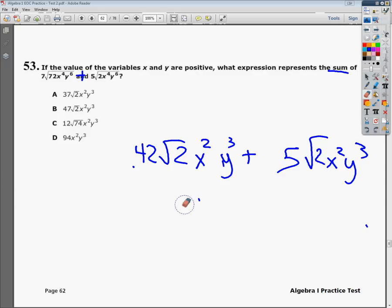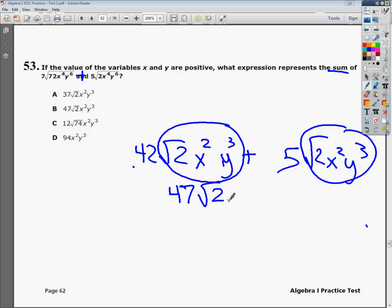Since this whole section and this whole section are the same, it means I have like terms, so I can just add the two numbers together. 42 plus 5 is 47. So my final answer is 47 times the square root of 2x to the 2nd y to the 3rd. That's the mathematical way to get the answer, which is B.